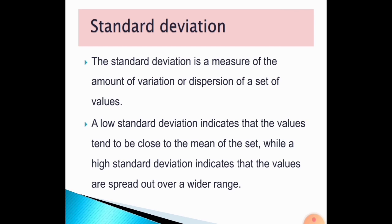Standard deviation is a measure of the amount of variation or dispersion of a set of values. A low standard deviation indicates that the values tend to be close to the mean of the set, while a high standard deviation indicates that the values are spread over a wide range. Later we will see examples to understand more.